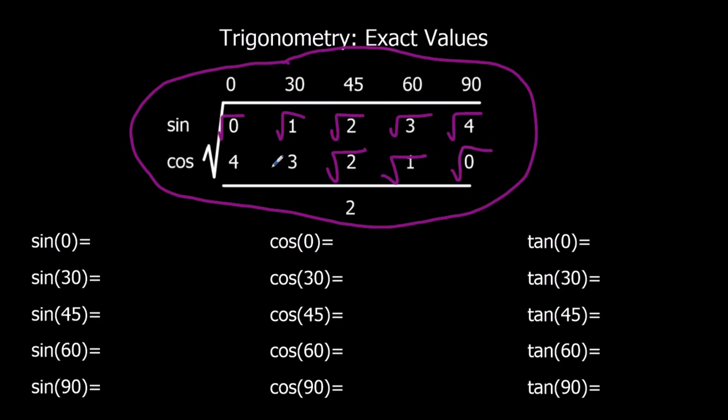The big square root sign is just instead of writing 10 different square root signs. We've got the values of 0, 30, 45, 60, and 90, the ones we need to remember along the top, and it's all over a 2, just a normal 2.